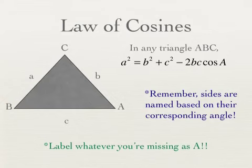Law of cosines looks a little more complex and can be more complicated, though sometimes easier depending on the problem. We use the same setup where angles and sides are named the same thing when they're across from each other — lowercase letters are sides, uppercase letters are angles. Textbooks give you three different versions of this formula starting with A², B², or C², but I just use one and we rename our triangle to fit our formula.